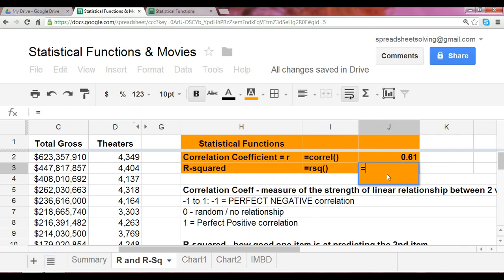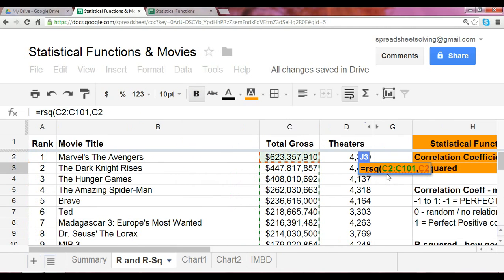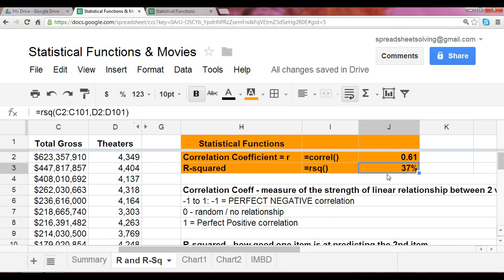Now, the r-squared, we can do exactly the same thing here, and make sure we capture two data ranges, which is the total gross and the number of theaters. Close the parentheses, hit enter, and just as we expected, we have a positive r-squared at 37%, or 0.37.